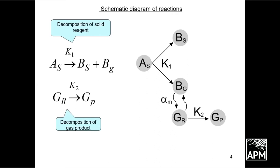We see the porous body of oil shale is formed as the reagent AS. The pores contain a certain amount of gas GR. When we are heating oil shale, the solid reagent AS decomposes into two solid products BS and gas BG, entering the pores and mixing with the gas of the same composition GR. In turn GR transforms into gas GP.